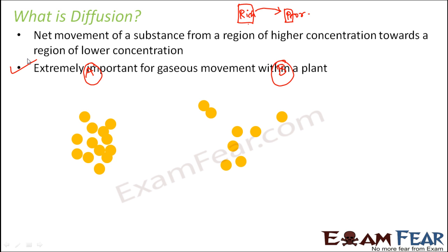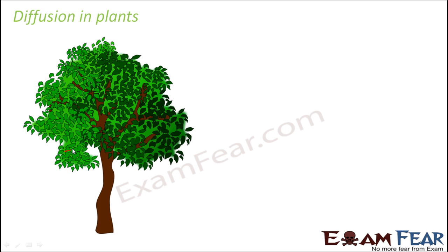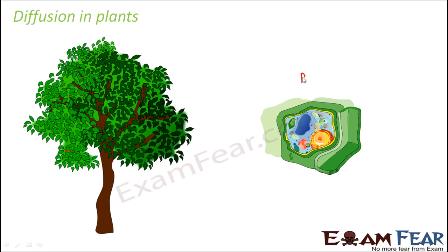That movement of gas inside the plant will also happen based on concentration. For example, in the leaves the concentration of a particular gas is more, so it will start moving from leaves towards the roots where its concentration is very less. This is one driving force behind movement of substances inside a plant. The plant itself is made up of a large number of cells, just like our body. Cells are the building blocks of any living organism — just like bricks form a building, many cells together form an organism.